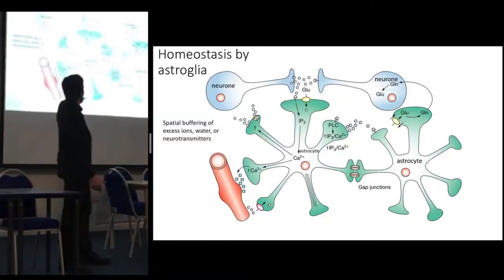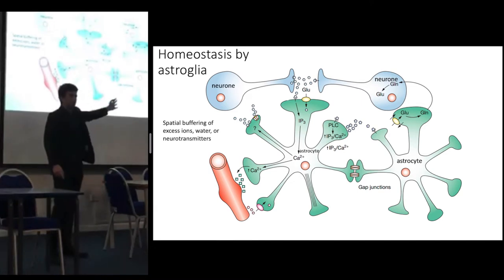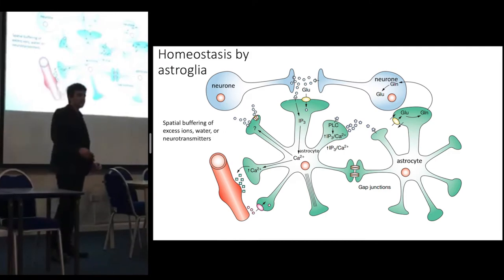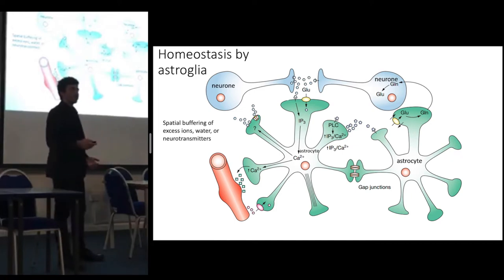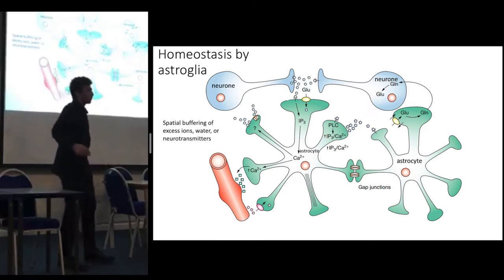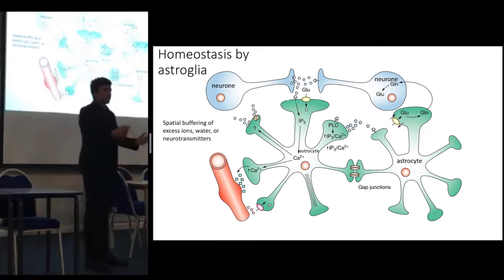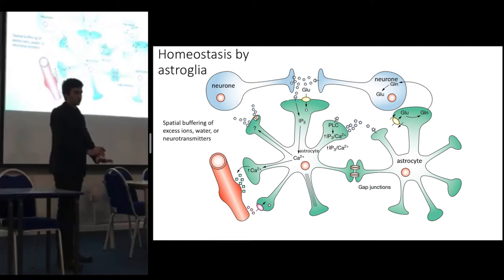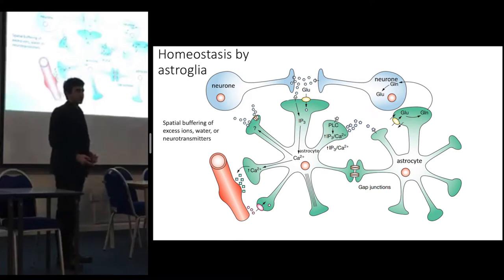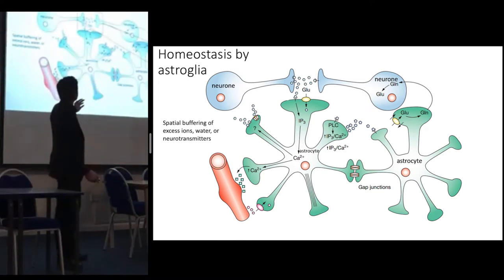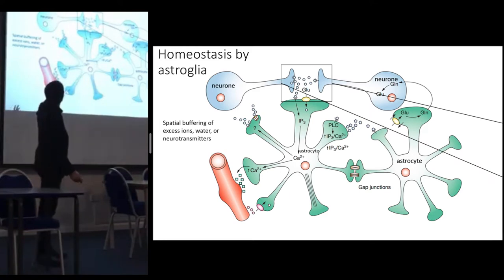Back to the diagram — the gap junctions allow the cytoplasms to be connected, giving astrocytes the function of spatial buffering. When there's too much potassium ions, neurotransmitters, or water in one area, the astrocytes spread them through the tissue so they're not too concentrated, because if they're too concentrated in one region they can seriously damage the neurons.